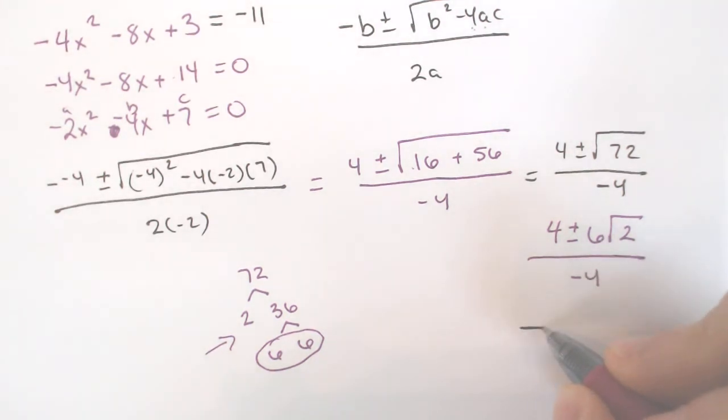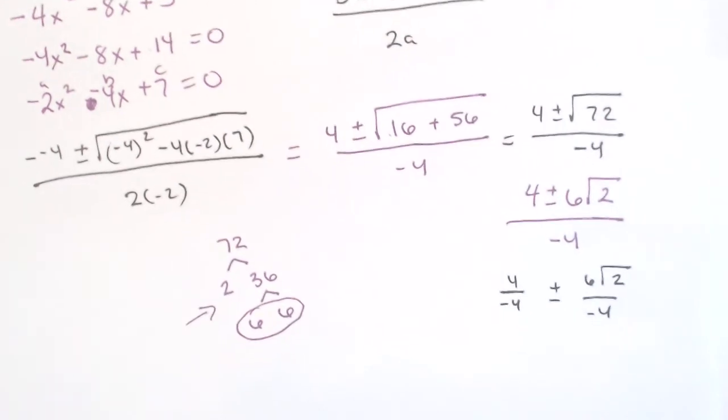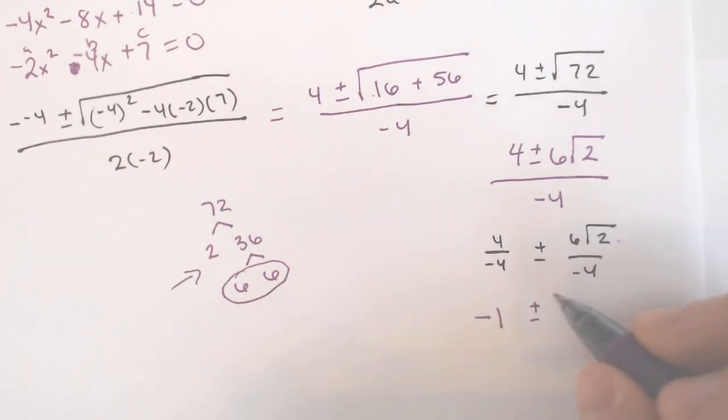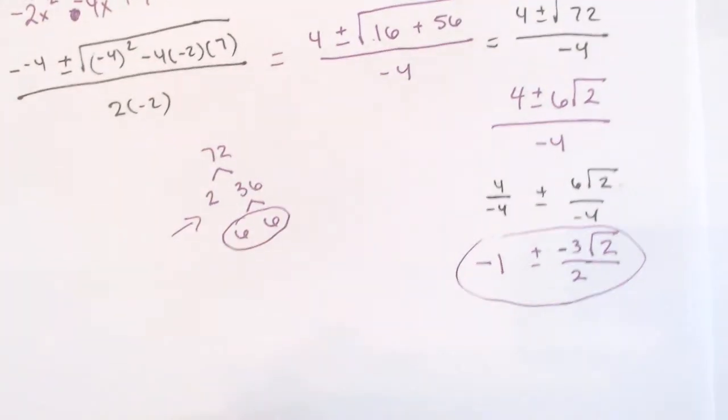So we have 6 square root of 2 all over negative 4. And here is where splitting this up will be a lot easier. If we split up the 4 and we end up with something that looks like this. Now it is important to note that this 2 over 4 does not simplify because that's a square root of 2. So that's not going to simplify. But 4 divided by negative 4 is negative 1. And 6 divided by negative 4 doesn't divide, but it simplifies. 6 and 4 both divide by 2. It simplifies to negative 3 over 2 with the square root of 2. Now this is the answer. You can circle it.